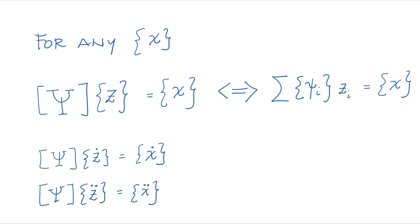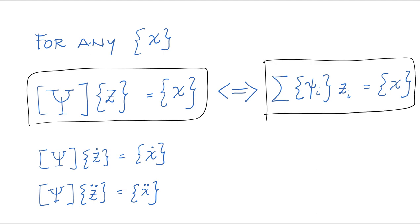And these phi's are the mode shapes. And we can write this same equation as this. It means exactly the same thing. We are basically taking each column, multiplying it times a constant z, or a scalar z, and we get x after we have included all the modes.